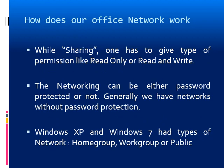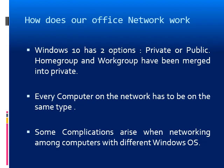While sharing, one has to give a type of permission — read-only or read-and-write. If read-only permission is given, the other computer cannot make any changes to the data. Networking can either be password protected or not; generally in our offices we have networking without password protection. In Windows XP and Windows 7, there are three types of network: home group, work group, or public. Windows 10 has two options: private or public — home group and work group have been merged into private. Every computer on the network has to be on the same type. Some complications arise when networking among computers with different versions of Windows.